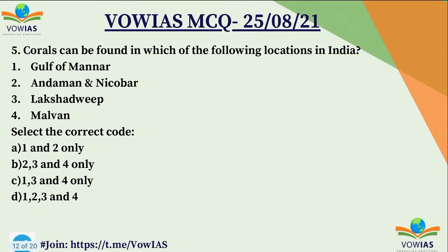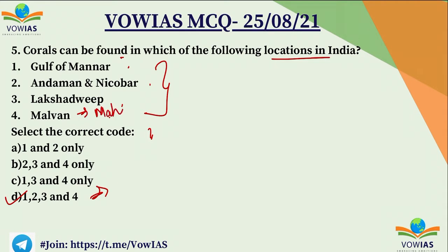The fifth question: corals can be found in which of the following locations in India? First, Gulf of Mannar; second, Andaman and Nicobar Islands; third, Lakshadweep; fourth, Malvan. The correct answer is D — all four locations. In all these locations — Gulf of Mannar, Andaman and Nicobar Islands, Lakshadweep, and Malvan in Maharashtra — we can find corals.